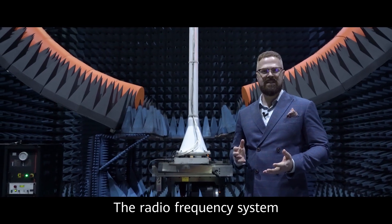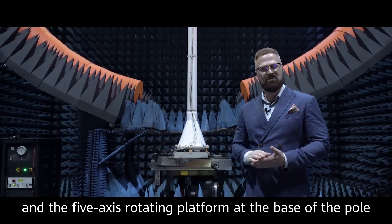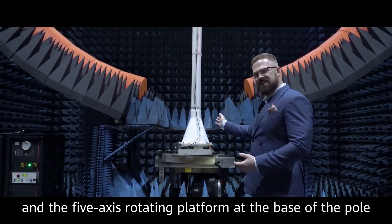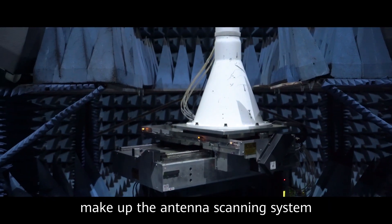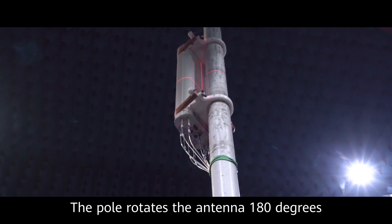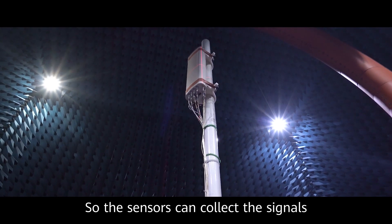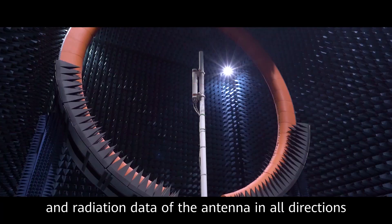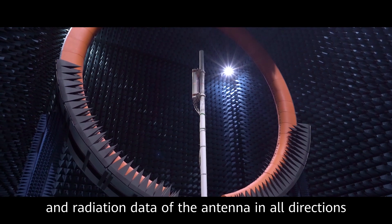The radio frequency system and the 5-axis rotating platform at the base of the pole make up the antenna scanning system. The pole rotates the antenna 180 degrees, so the sensors can collect the signals and radiation data of the antenna in all directions.